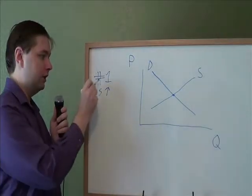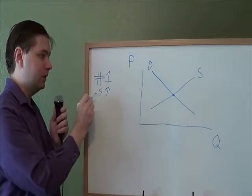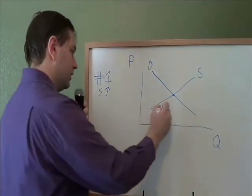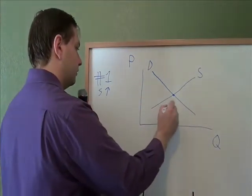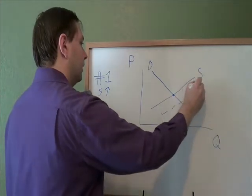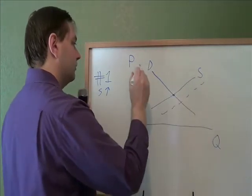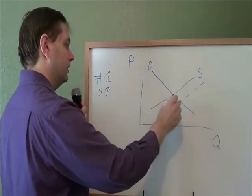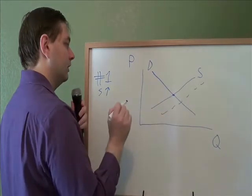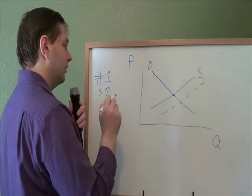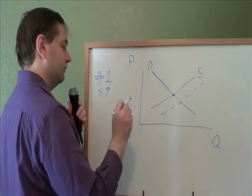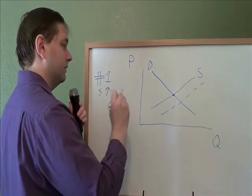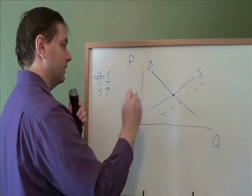First question: what happens when supply increases? An increase always means you move to the right on the graph. That's just a rule of your demand and supply graph — increase means move to the right, decrease means move to the left. Don't think about moving up or down. Economics decided that increase meant to the right and decrease to the left.